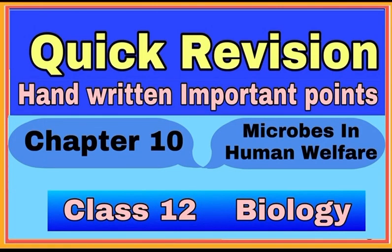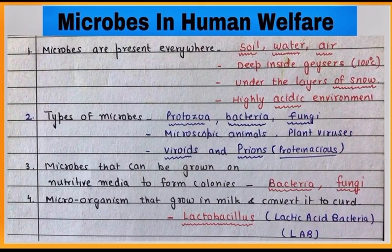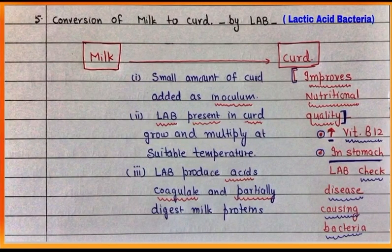Hello students, here are handwritten important points from chapter number 10: Microbes in Human Welfare. Microbes are not only harmful — rather, some of them are useful for human beings. Lactic acid bacteria, or Lactobacillus, is helpful in converting milk to curd.